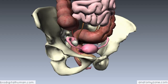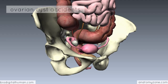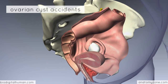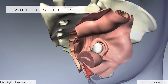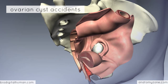There are three things I'm going to talk about in relation to the ovaries. The first is ovarian cyst accidents. The ovaries can develop cysts — an ovarian cyst is a fluid-filled sac. The problem with these cysts is that they can rupture, or they can cause the ovary to twist, which compromises its blood supply and can lead to infarction and ultimately necrosis and death of the ovary.